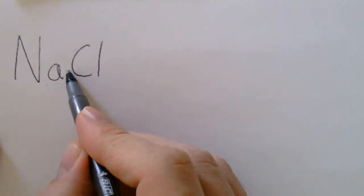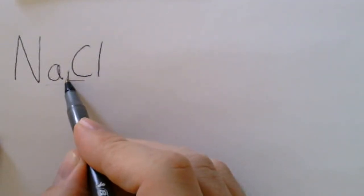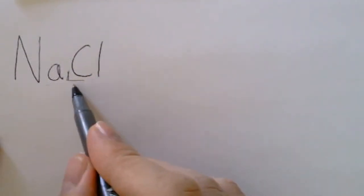So the way you can know when one symbol ends and another begins, is if a symbol is two letters, the second letter is always lowercase, and so when you see a new capital letter, you know that you're starting a new element.